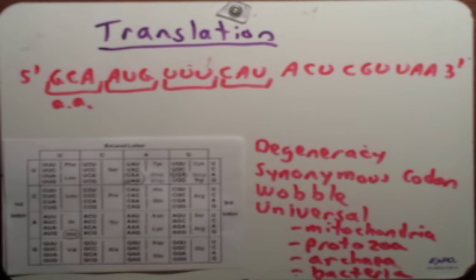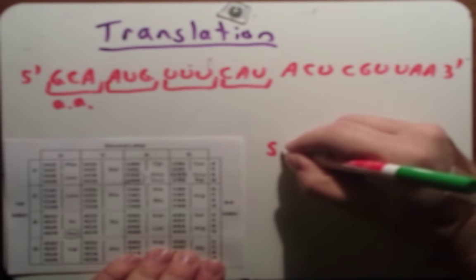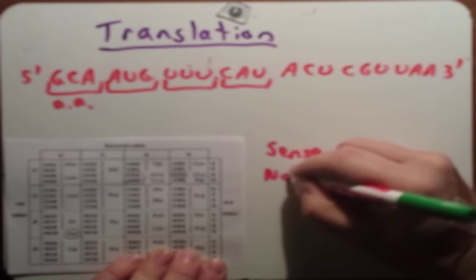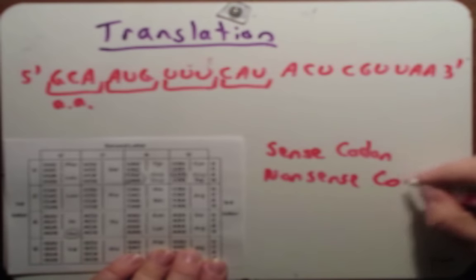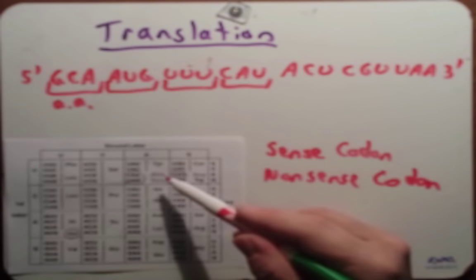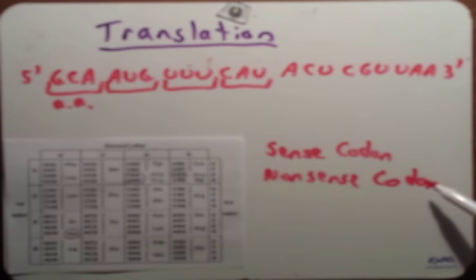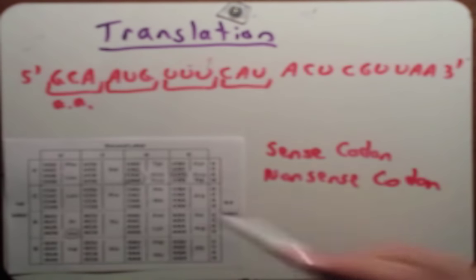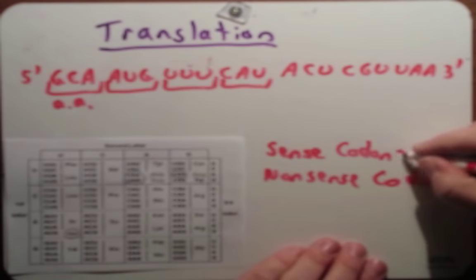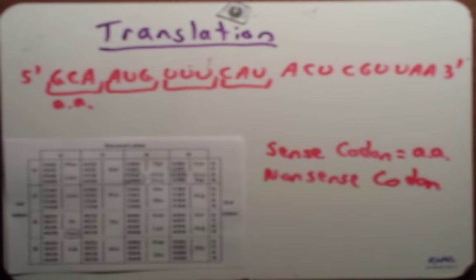Let's talk about what a sense codon is and what a nonsense codon is. Nonsense codons are just another way to say stop codons. This will come back later when we start talking about mutations. A sense codon is everything else — sense codons code for specific amino acids. It's a generic term for all codons except the stop codons, and it would also include the start codon because that codes for methionine.